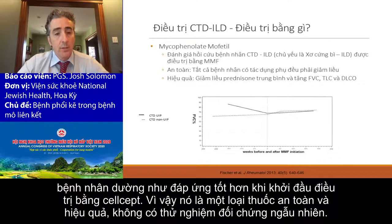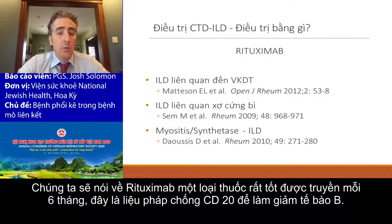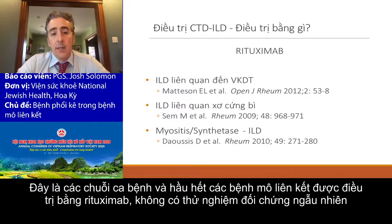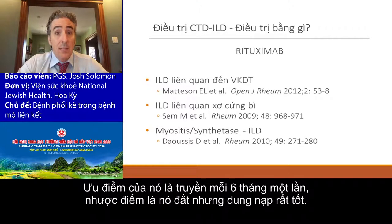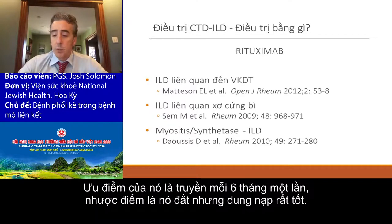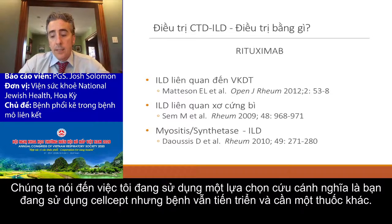Rituximab is also a really nice drug to use — an infusion every six months, it is an anti-CD20 therapy that reduces your B cells. There are case series in all the major connective tissue diseases using Rituximab. There's no randomized controlled trial, but it's well tolerated. The downside is that it's expensive. Rituximab is usually used for salvage — meaning if you have someone on CellCept who is progressing and you need another agent.